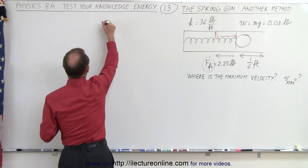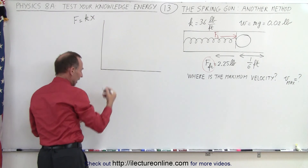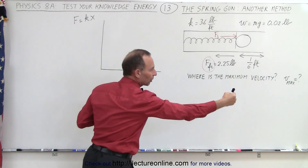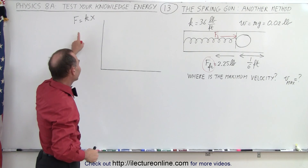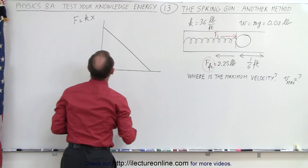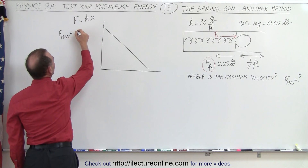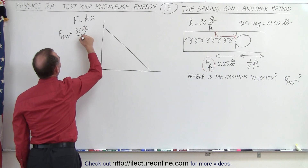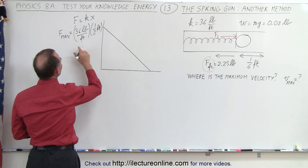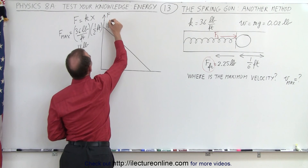The way we can picture that is through a graph. We can show that the force due to the spring is equal to k times x. The magnitude of the force is k times x. The maximum force by the spring occurs when the spring is fully compressed, and that equals the spring constant 36 pounds per foot multiplied times one-half a foot. That gives us a force of 18 pounds.